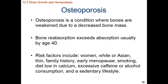Sometimes bone destruction outpaces bone development. This generally happens in someone with chronically low blood calcium levels, who will constantly have elevated PTH and will be chronically dissolving their bones faster than they're building them back up. This bone reabsorption begins to outpace bone development around age 40 for most individuals. Risk factors include being female, white, or Asian; being thin; having a family history; early menopause; smoking; a diet low in calcium; excessive caffeine or alcohol consumption; and a sedentary lifestyle.